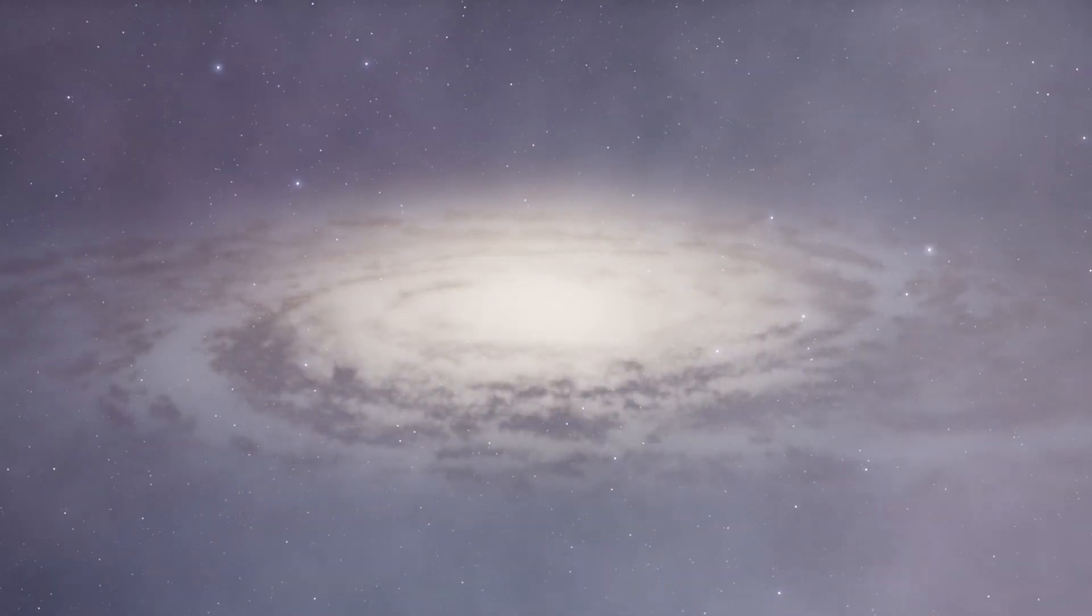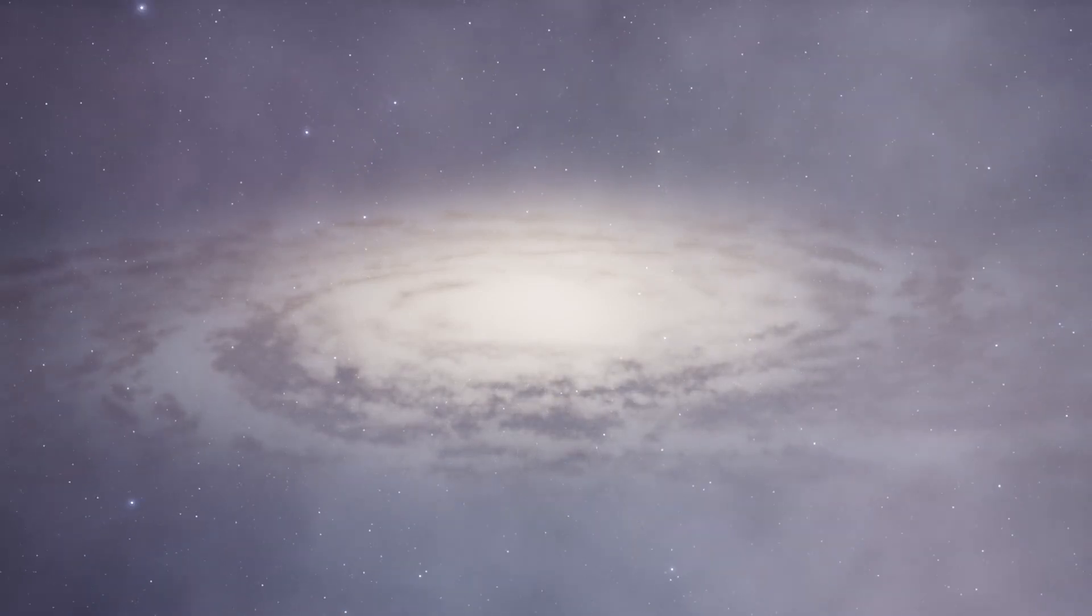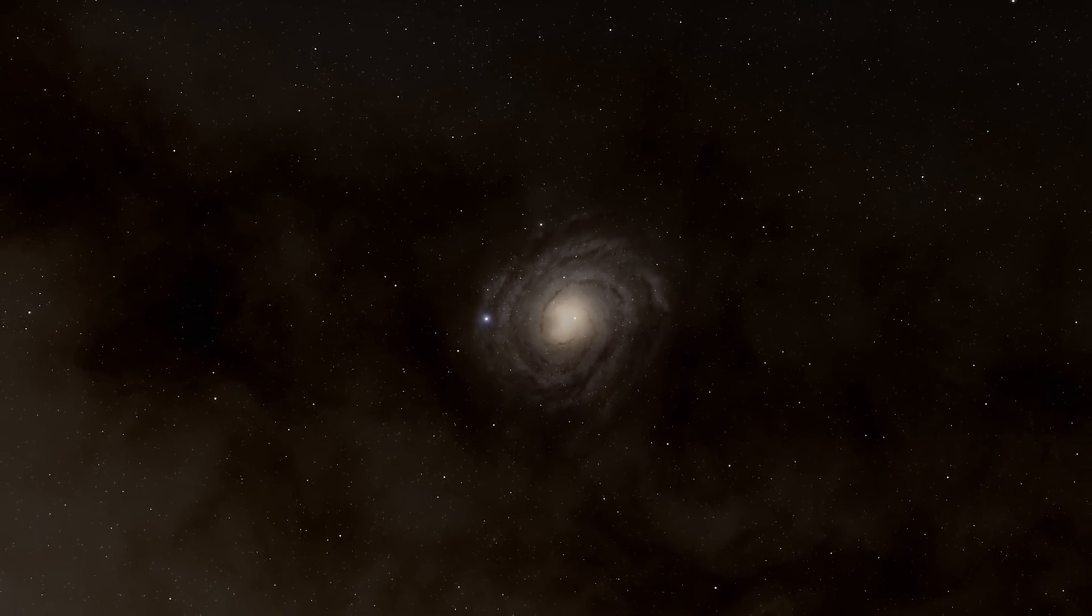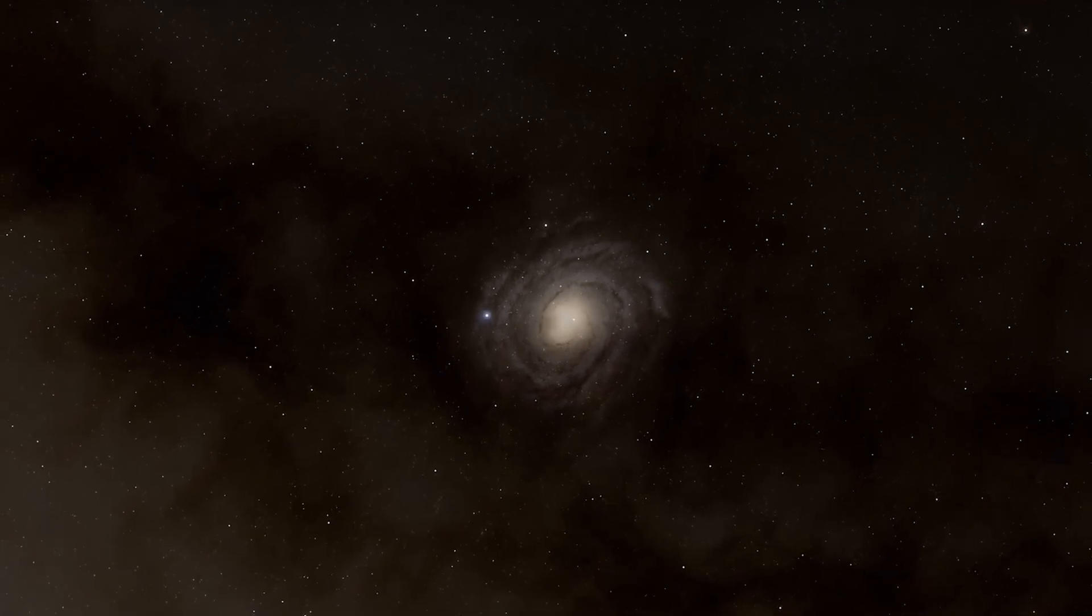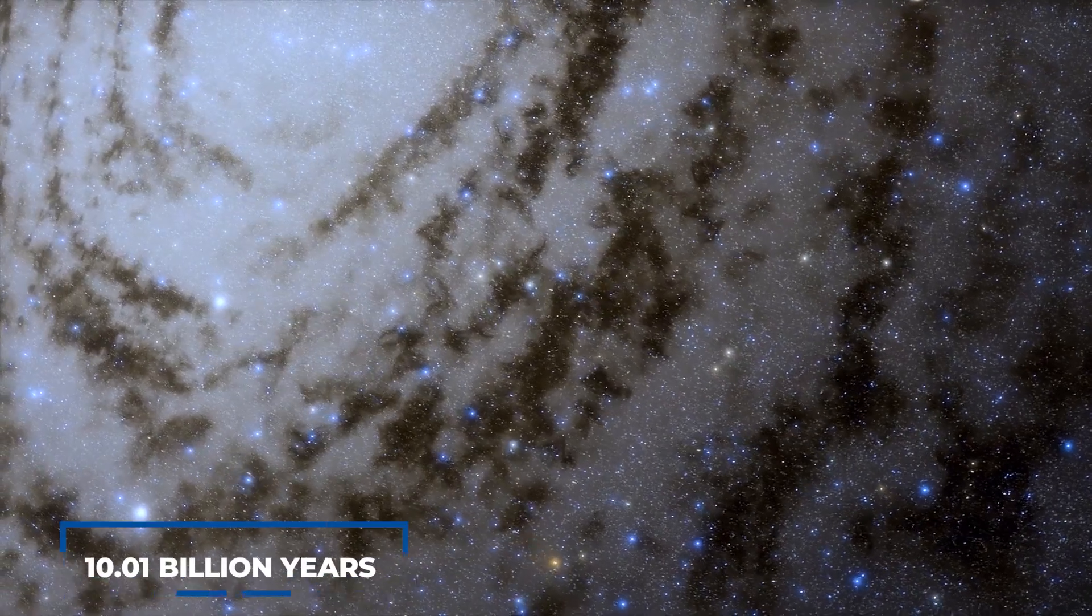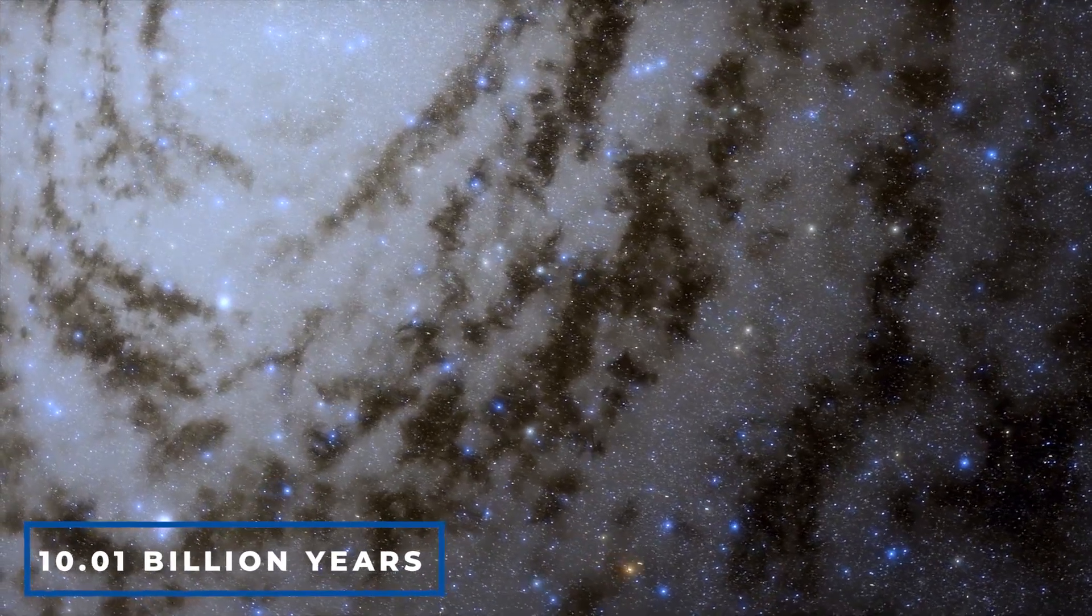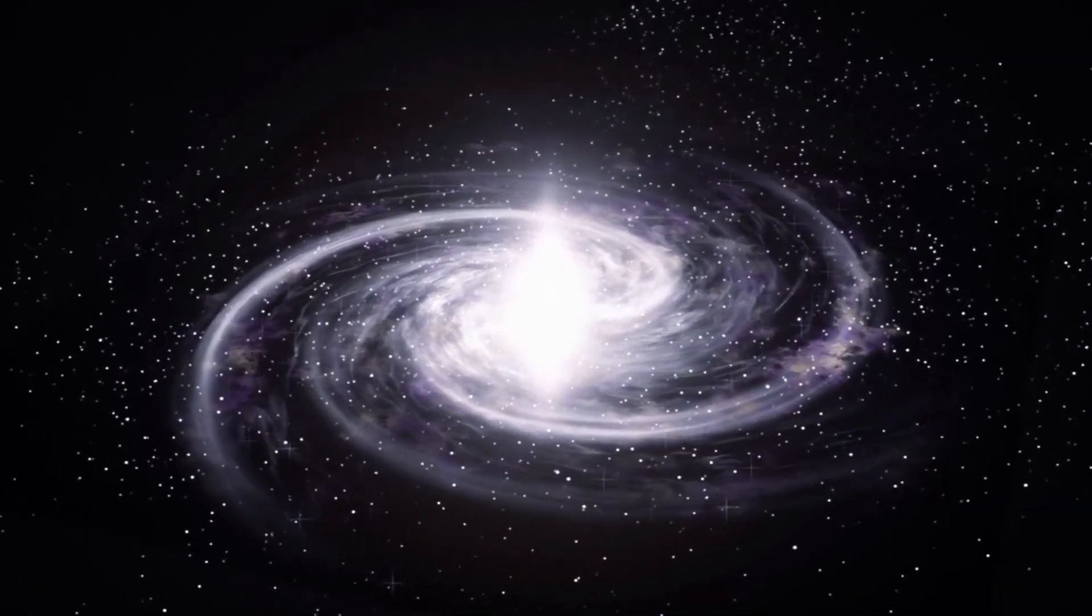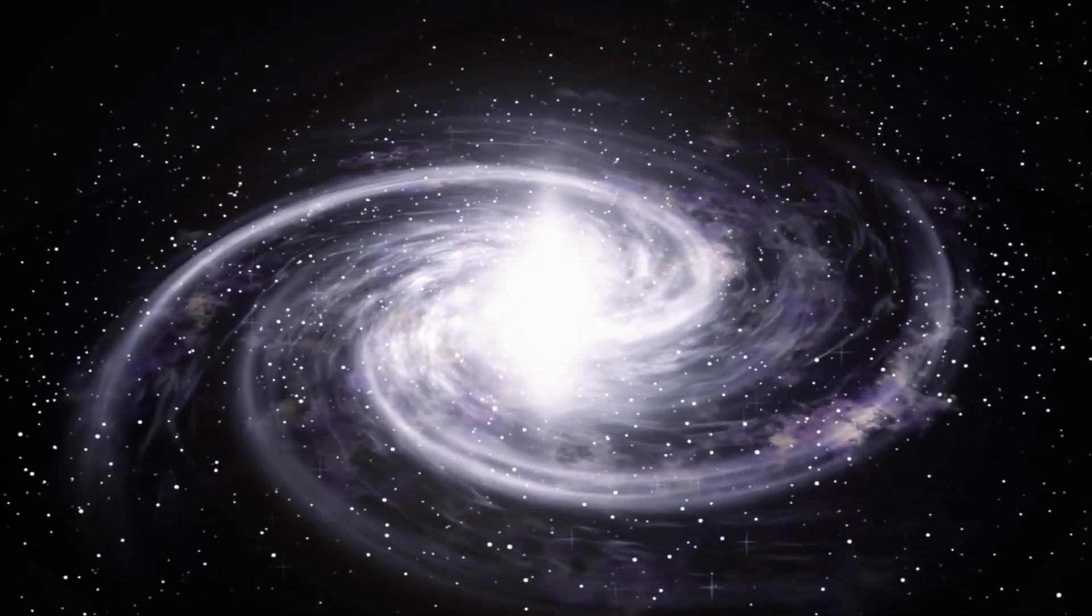The Andromeda galaxy, with its estimated mass between one and two trillion times that of our Sun, stands as an immense celestial structure neighboring us in the expanse of space. Despite its proximity, Andromeda's age of around 10.01 billion years signifies its ancient presence in the cosmos, suggesting a complex history of formation and development.